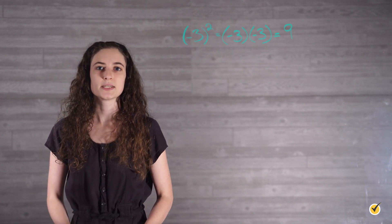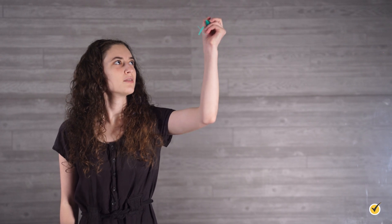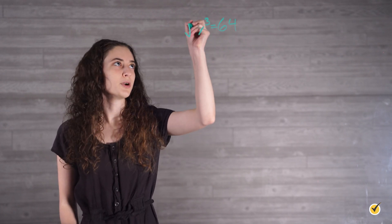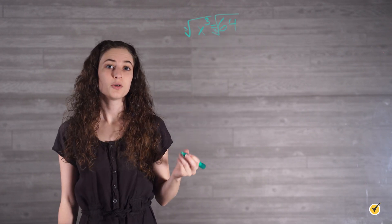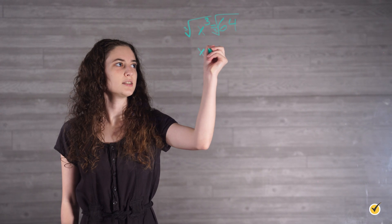Now that we have covered the basics, let's jump into actually solving an equation. We are going to start with a super simple one: x cubed equals 64. The first thing we need to do is to get x by itself. In order to do that, we need to undo the power of 3. The opposite of exponents are roots, so we take the third root from both sides. The third root is also known as the cube root. The cube root of 64 is 4, so x is equal to 4.